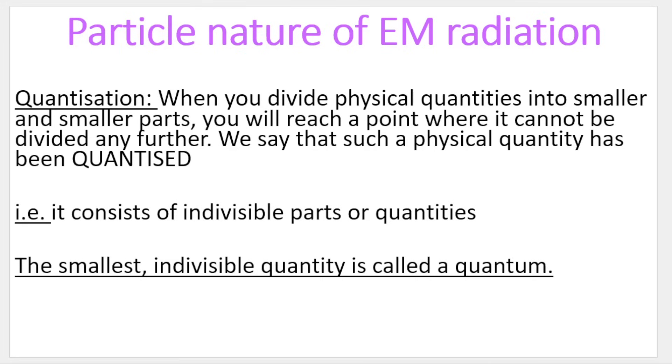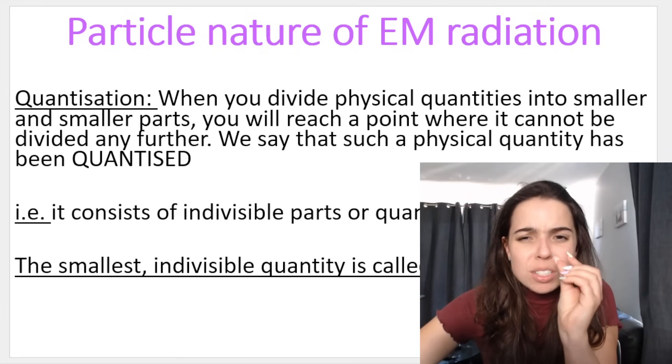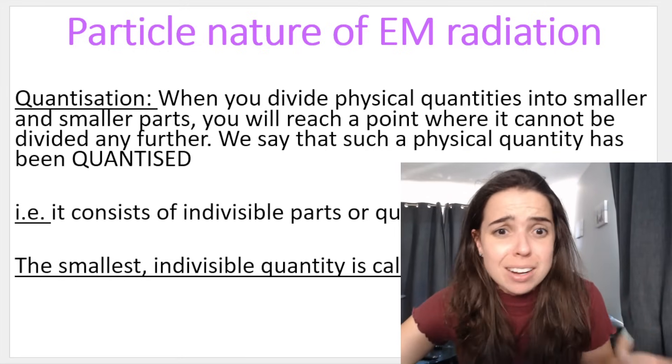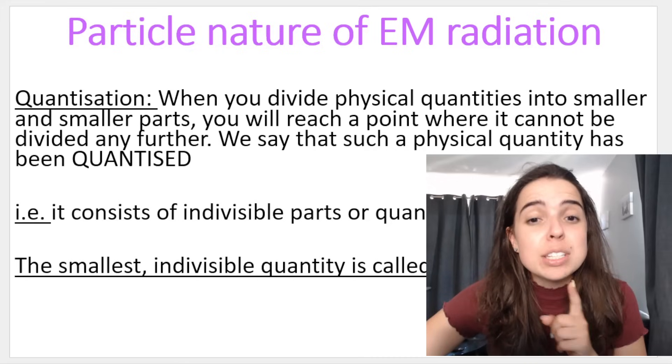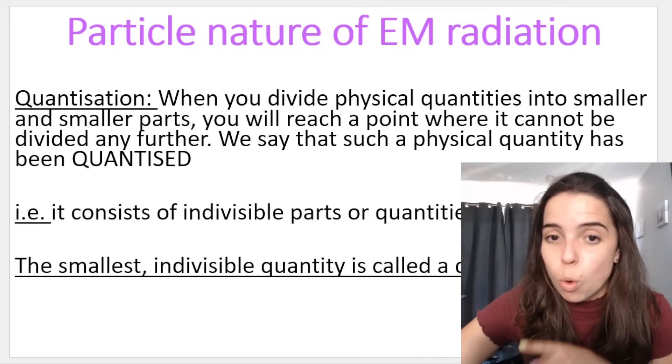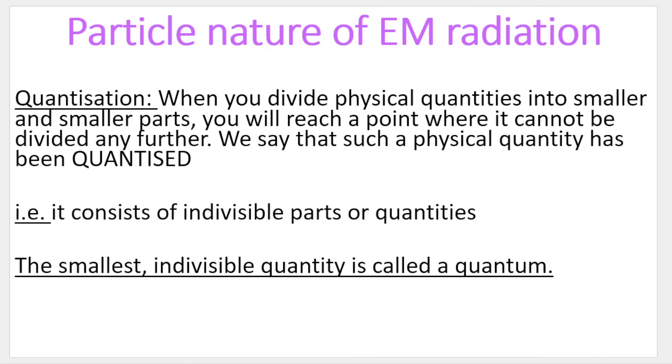So, think about this concept as being called quantization. So, if you take a physical quantity and you divide it up into tiny parts, and you keep going, and you reach a point where you cannot divide it anymore, we say that that quantity has been quantized. So, it consists of indivisible parts or quantities, which means little parts or quantities that can't be divided up anymore. And, the smallest indivisible quantity is called a quantum.